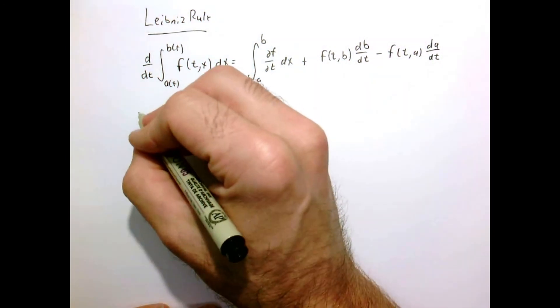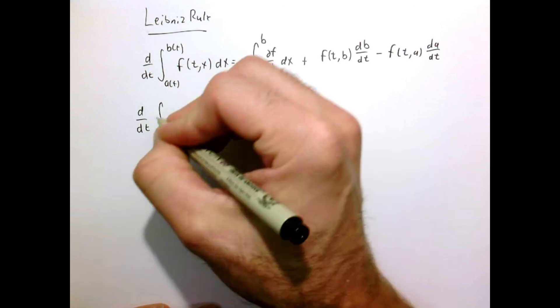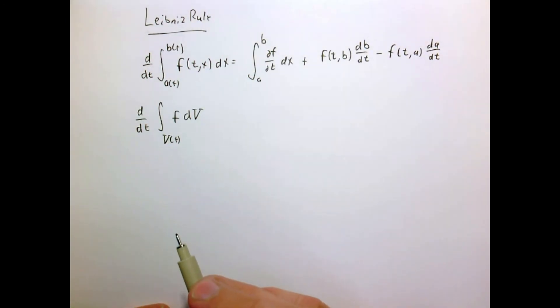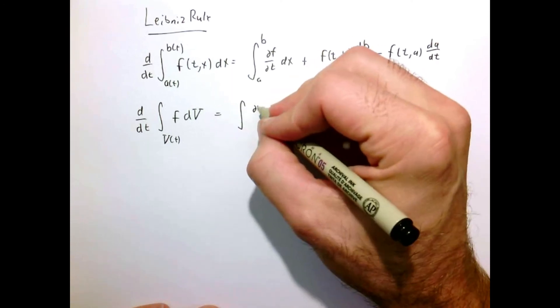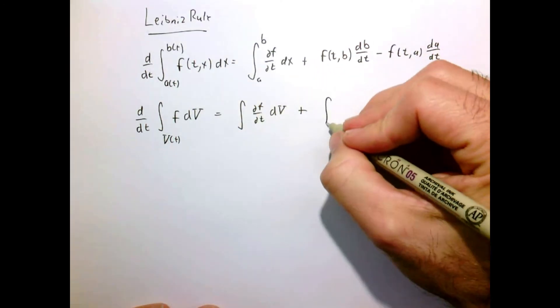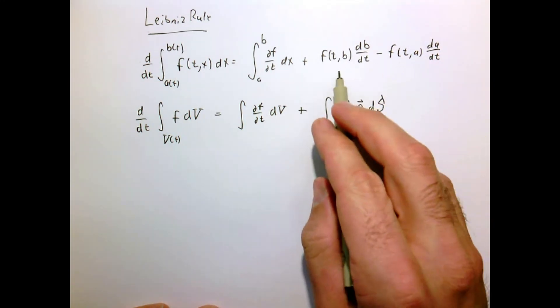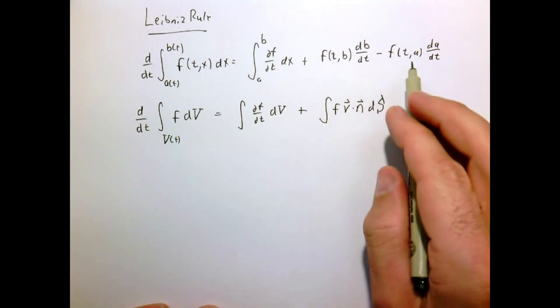Turns out in three dimensions, if we want to integrate some function over a volume and that volume of integration is changing with time, we have the same result. Except now we have a surface integral instead of these two values at the left and the right side of the domain.